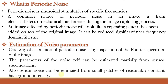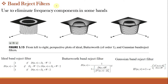Periodic noise can be analyzed and filtered effectively using frequency domain techniques. The basic idea is that periodic noise appears as a concentrated burst of energy in the Fourier transform, and our approach is to use a selective filter to isolate the noise. There are three types of selective filters: band reject filters, band pass filters, and notch filters.